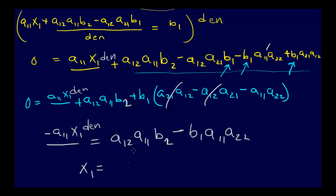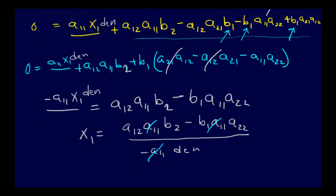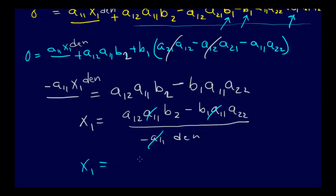So then we're going to divide both sides by minus a11 denominator, so that's going to be a12, a11, b2 minus b1, a11, a22, all over minus a11, and then that denominator from the start. And so then we can cancel, we should do this minus sign, we could just flip these. So basically we'll just cancel that a11, and as we pop this minus sign up, those two will switch sides, so we're pretty much there.